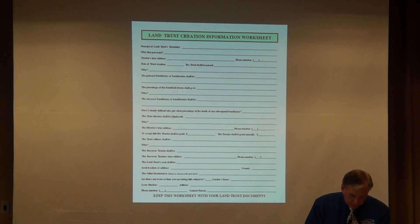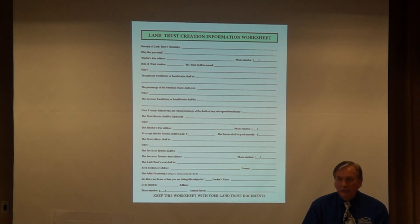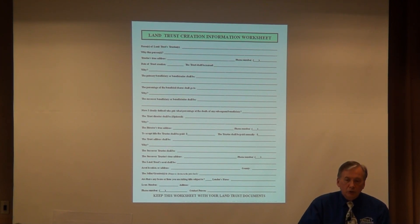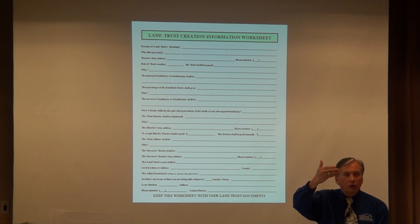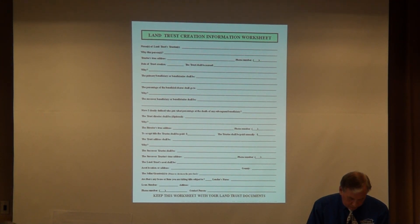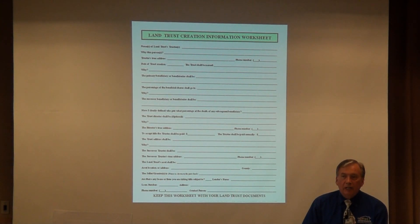The land trust asset shall be — that's where you name the address of the property you're putting into the trust and the county in which it's located. The seller grantor is whoever currently holds title: you, an LLC, a living trust, or whatever entity you have now — that becomes the grantor. The trust becomes the grantee of the property. Are there any loans or liens you are taking title subject to? How many of you have a house that has a loan on it?